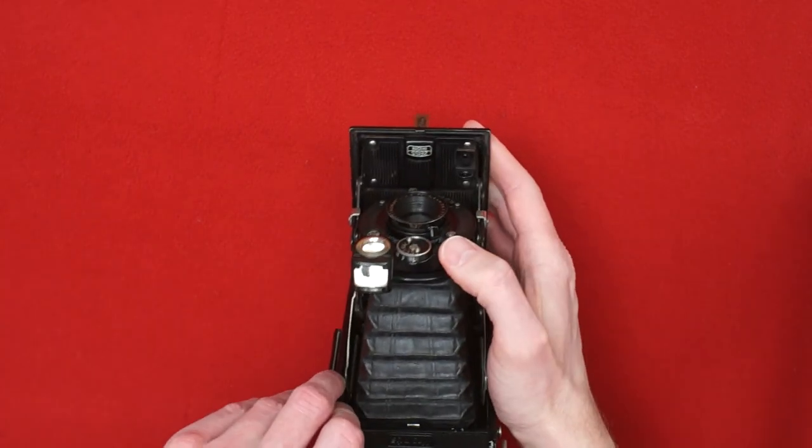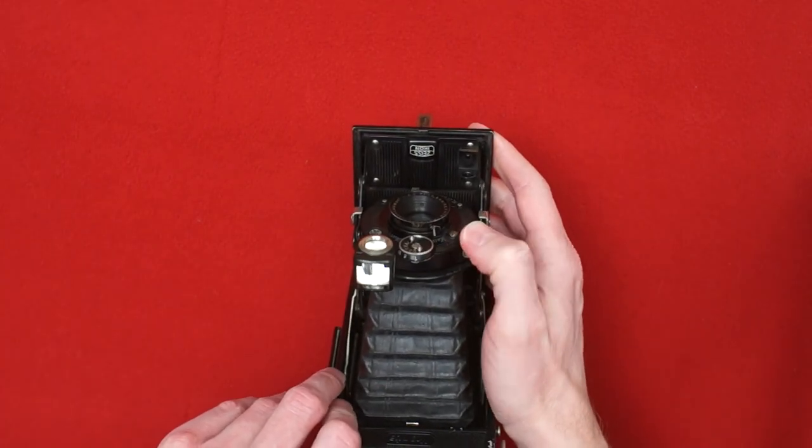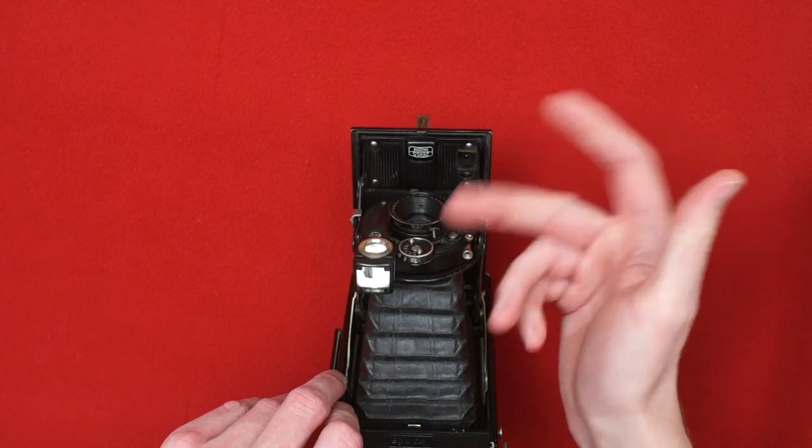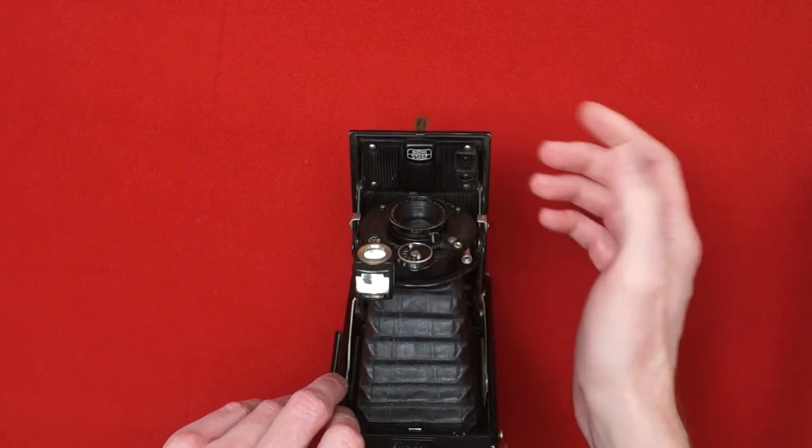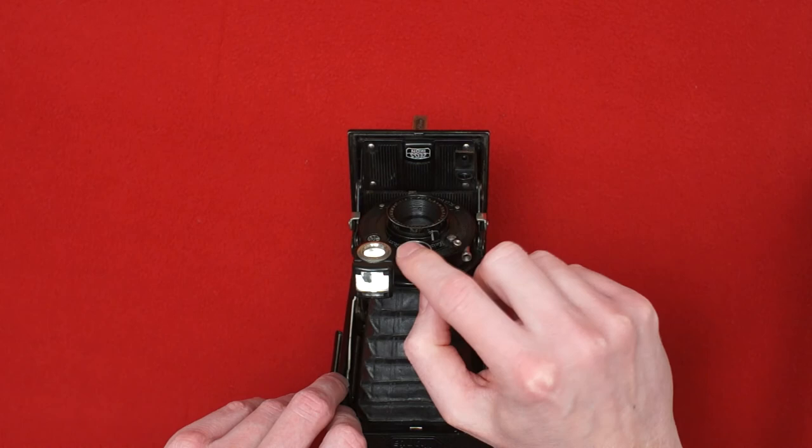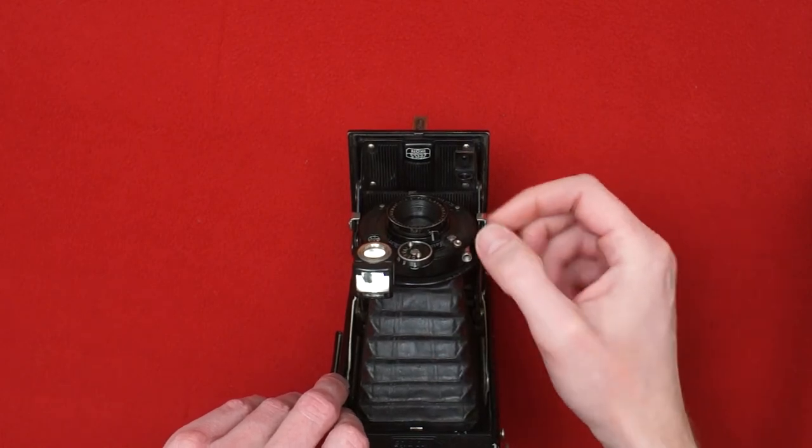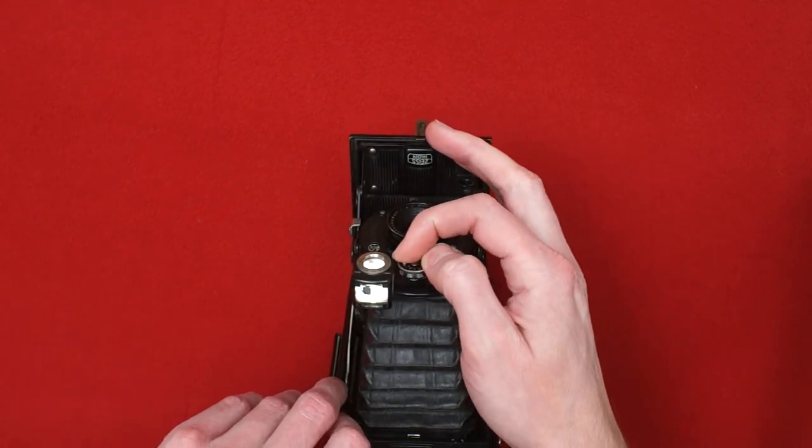Time mode basically is that you push the shutter once and the shutter will open. You push it a second time and it will close. So it's not like the bulb mode where you have to keep your finger on the shutter button to keep the shutter open.